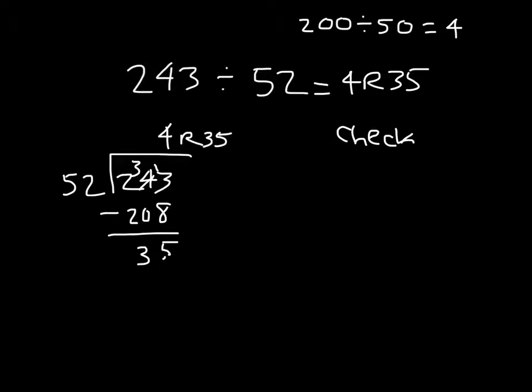Now we run our check. Take our divisor, which was 52, multiply it by 4, which was our answer. 4 times 5 is 20. 208.